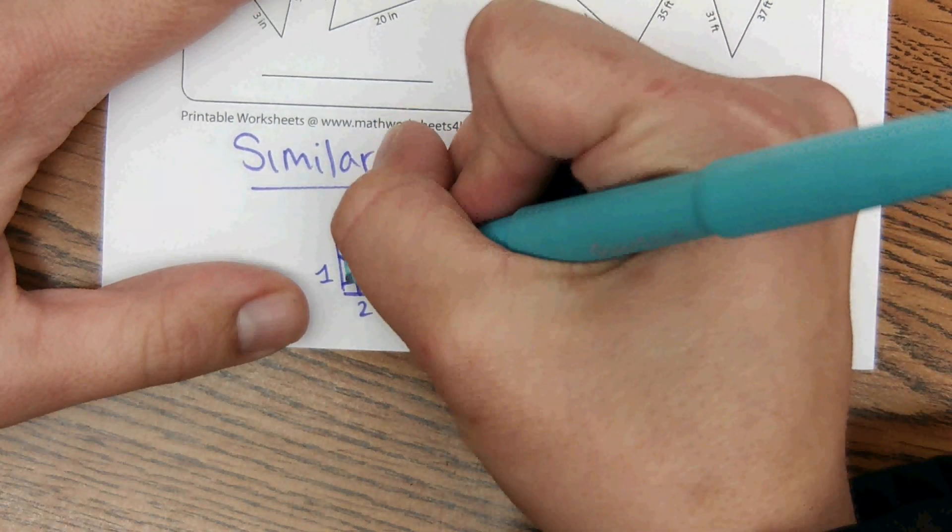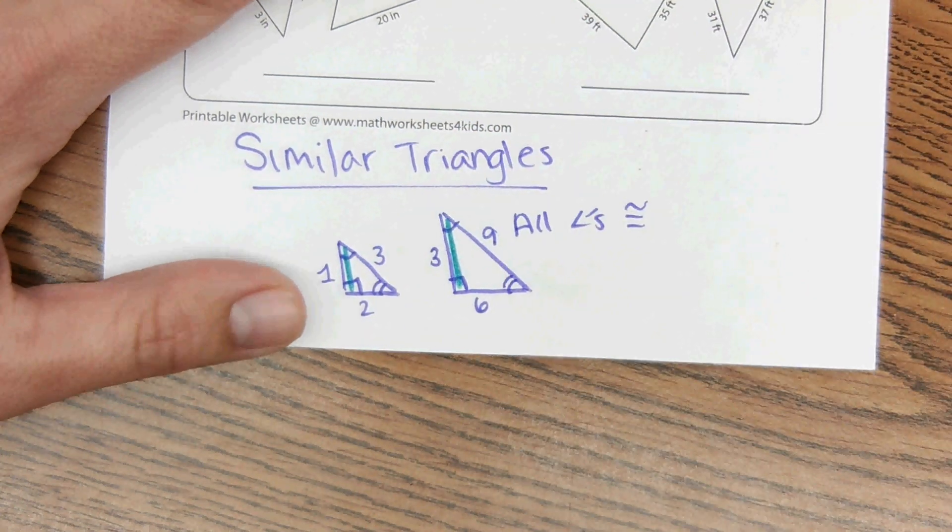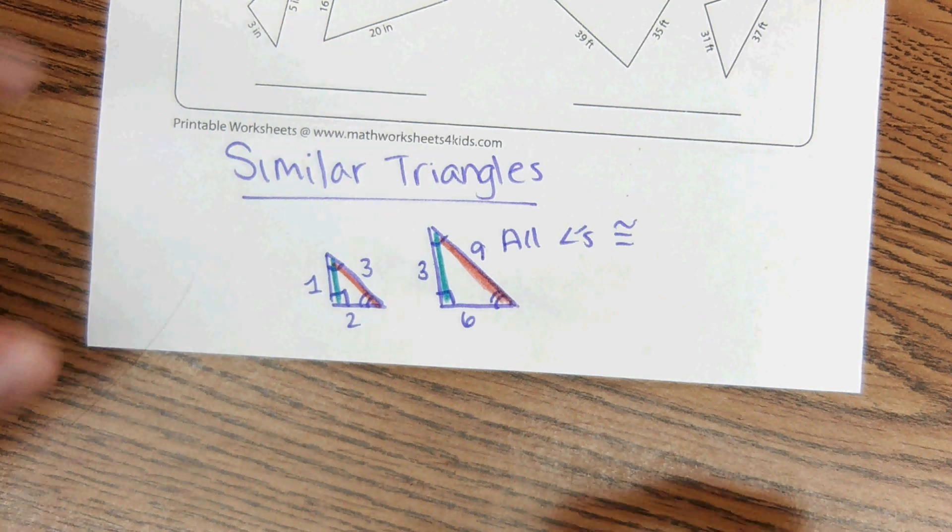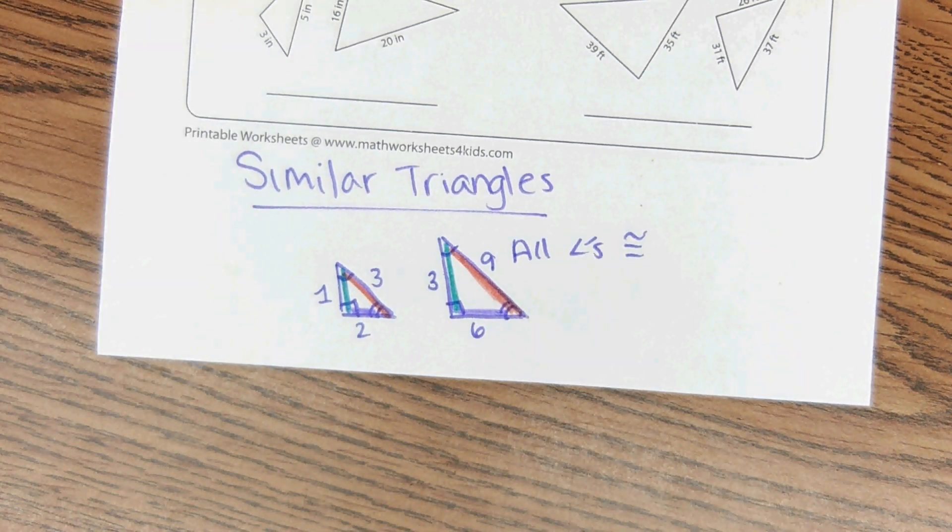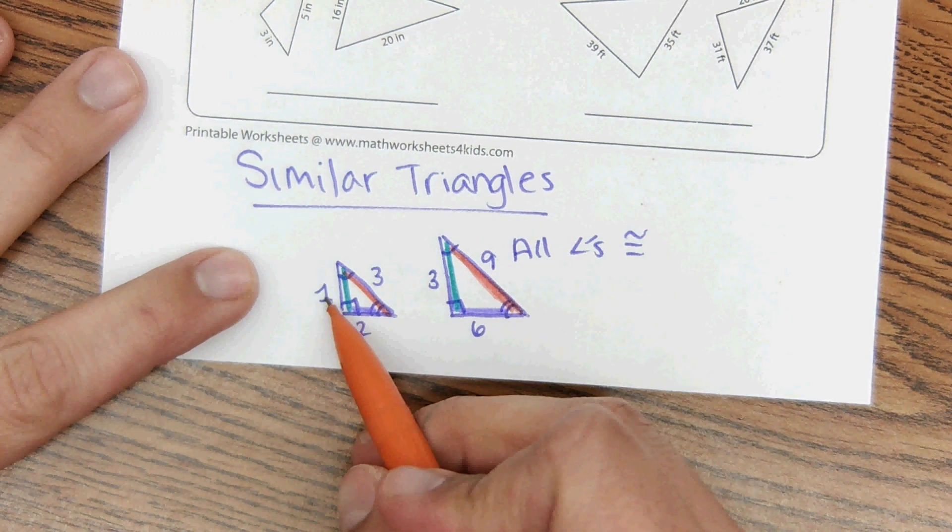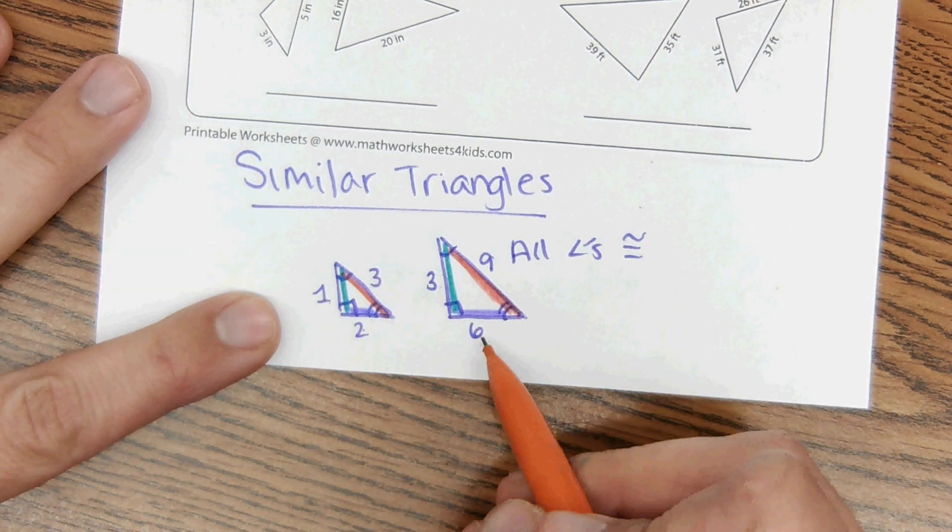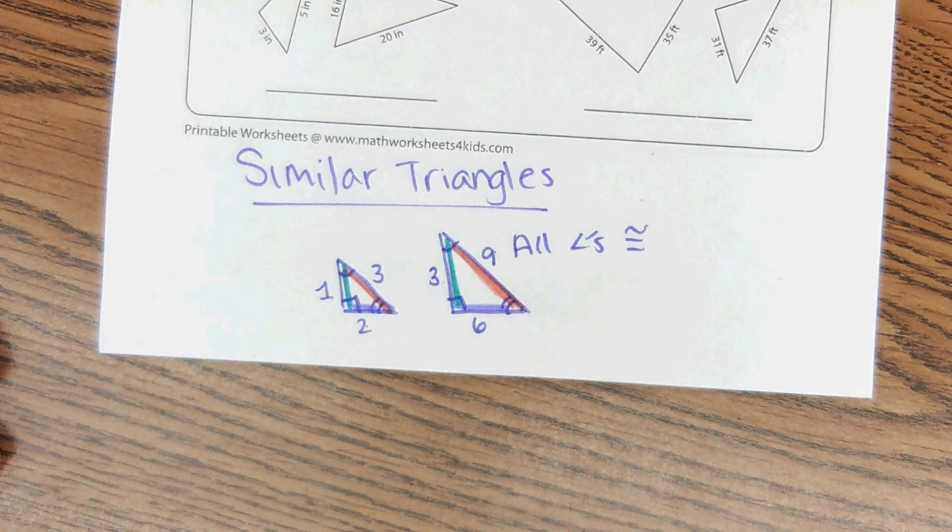They also have corresponding parts that correspond to each other. So like this corresponds here. And this hypotenuse corresponds with this hypotenuse. And then this side right here corresponds with this one. So from the corresponding sides, you should be able to do one times three is three, three times three is nine, and two times three is six. And if they're related through the same scale factor, then they are proportional and they are similar.